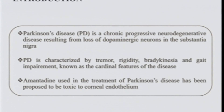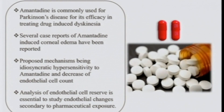Parkinson's disease is a chronic, progressive neurodegenerative disease resulting from loss of dopaminergic neurons in the substantia nigra. Amantadine, used in the treatment of Parkinson's disease, has been proposed to be toxic to corneal endothelium. Several case reports of amantadine-induced corneal edema have been reported, with proposed mechanisms being idiosyncratic hypersensitivity to amantadine and decrease of endothelial cell count.